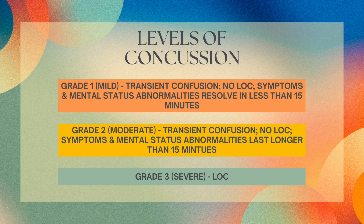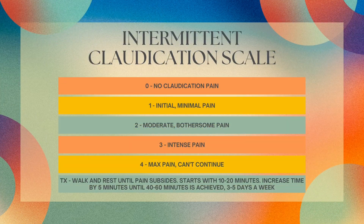Grade three is severe because you lose consciousness. Next is the intermittent claudication scale. Intermittent claudication is when muscle pain happens when you're active but then stops when you're at rest. It's usually a symptom of blood flow problems like peripheral artery disease. This is a great scale to use with your patients to gauge their level of pain, specifically their muscle pain.